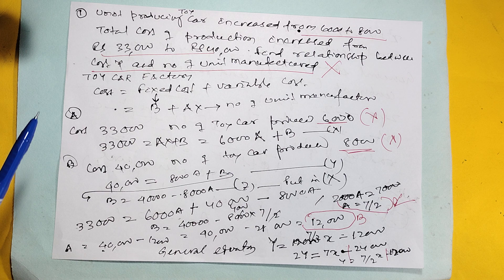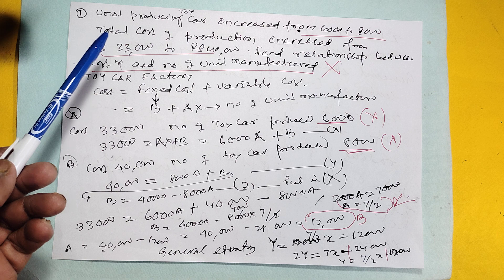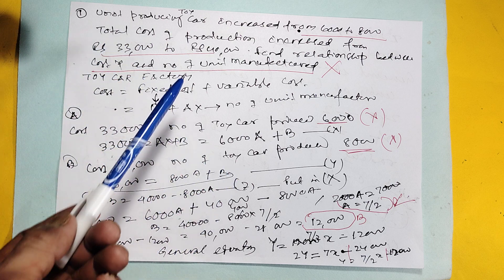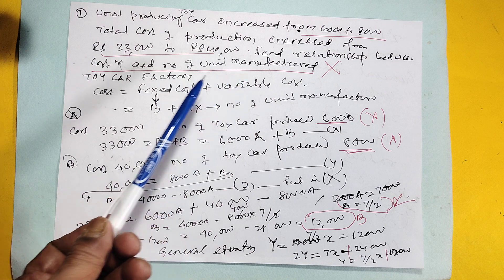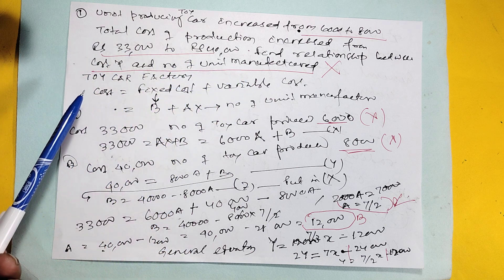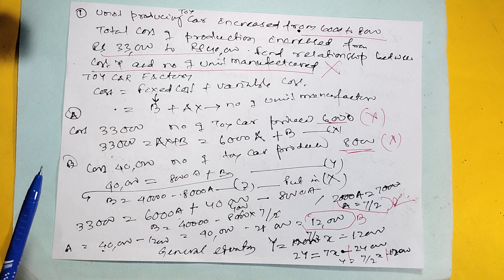This is based on Finance Mathematics. A unit producing toy car increased from 6,000 to 8,000. Total cost of production increased from 33,000 to 40,000. Find the relation between cost Y and number manufactured X.